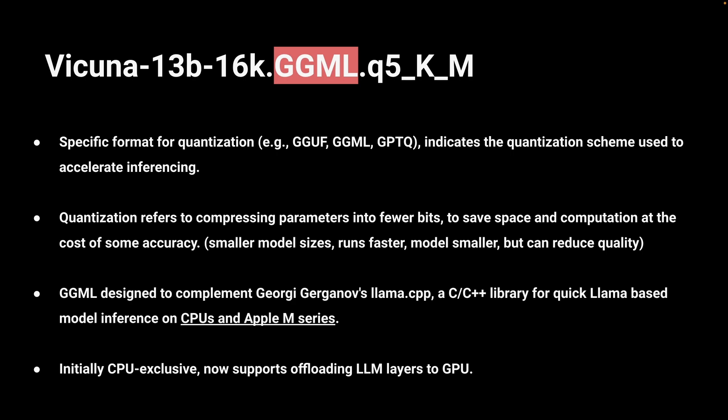GGML — this section of the model name refers to a specific format of quantization. Instead of GGML, you could see things like GGUF or GPTQ. Essentially, quantization refers back to the parameters — 13B, 7B, and so on. These model weights, represented as floating points, are then compressed to save space and computation requirements. Smaller model size means they run faster, but they can also reduce quality in the output. For example, if you had a model that was 4-bit quantized, each weight is represented using only 4 bits. This reduction in bit width limits the range of values that can be represented, which can result in rounding errors and a loss of precision — and this is what could make the model less accurate.